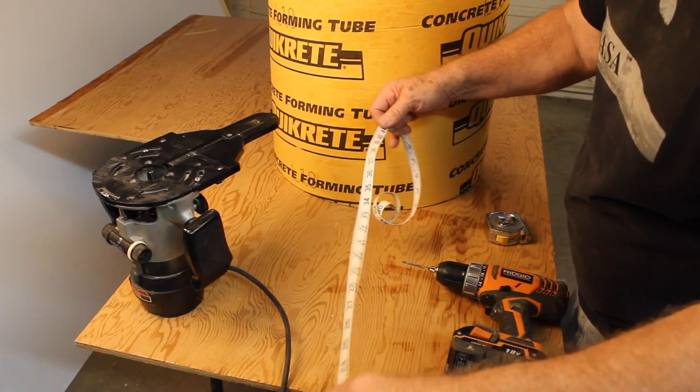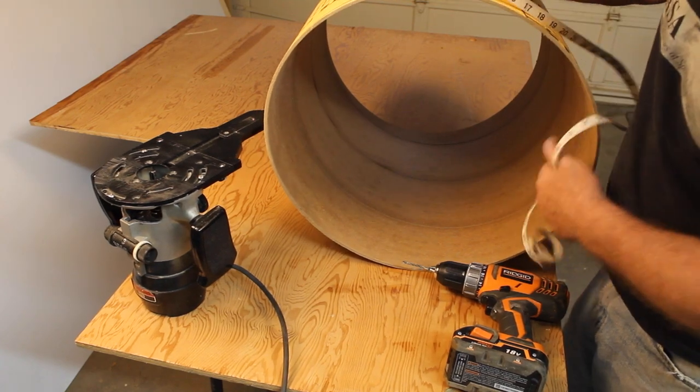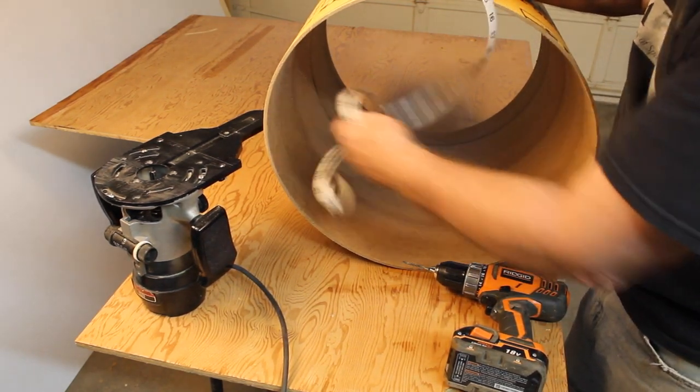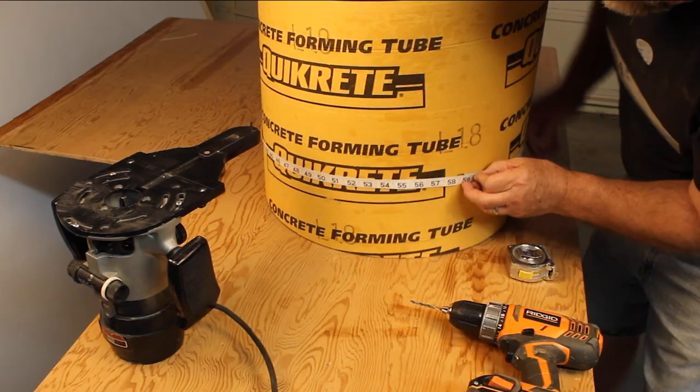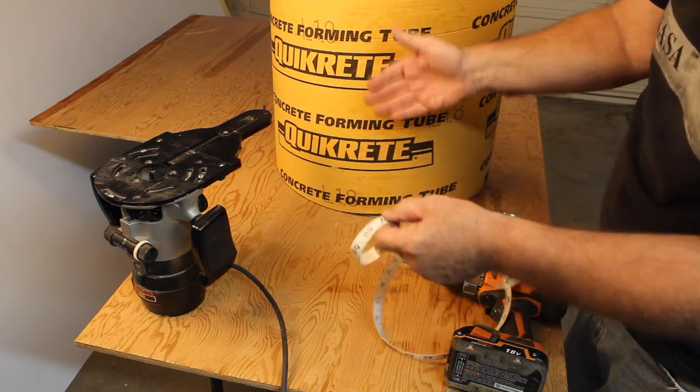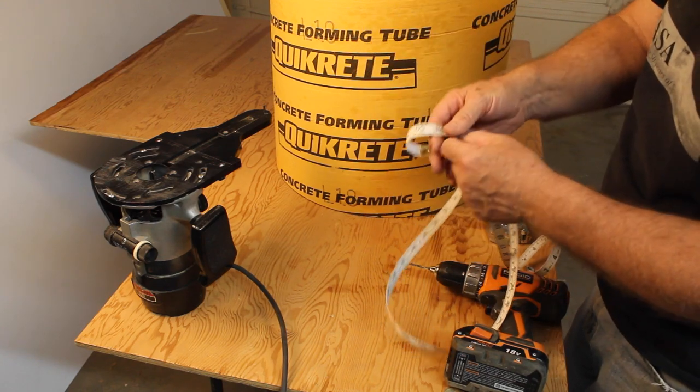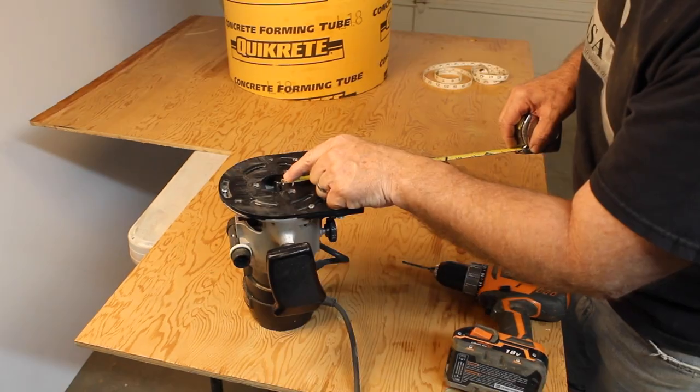Remember your high school geometry. You've got this pipe and it's squishy, so you can't just measure across and hope it's going to fit. Measure around here the circumference, about 58 and a quarter. Take 58.25 and divide it by pi. That gives you the diameter, and then divide that by two to get the radius.